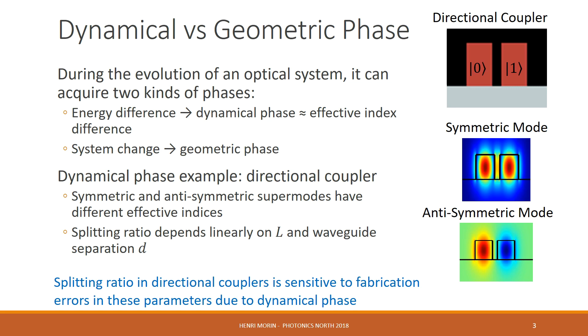Now, these super modes have different effective indices, and it is this difference which drives the system. At the end of the device, there is a specific splitting ratio of the output. But this splitting ratio depends linearly on the length and the waveguide separation, and this splitting ratio within these directional couplers are therefore sensitive to fabrication errors due to dynamical phase.